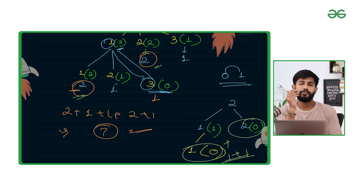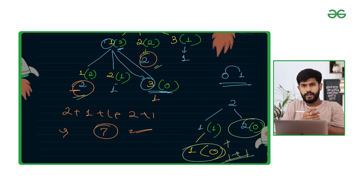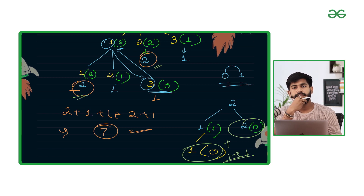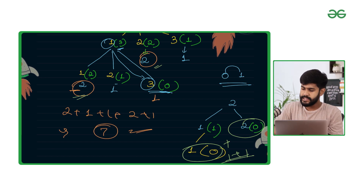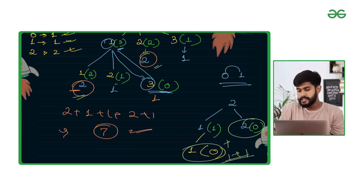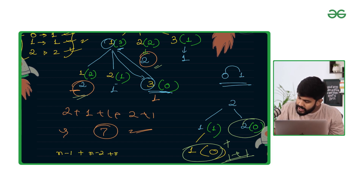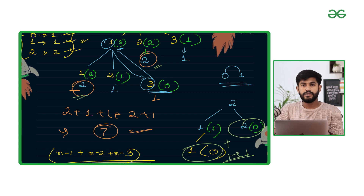So the recursive formula would be: we observe the leaf nodes as base cases. If the value is 0, return 1. If the value is 1, return 1. If the value is 2, return 2. These are the base cases. For any value greater than these, we add the values of n minus 1, n minus 2, and n minus 3, and that sum is the result.